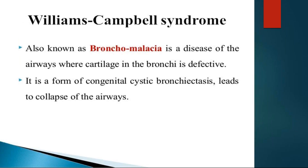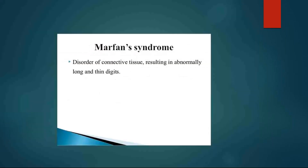Williams-Campbell syndrome is also known as bronchomalacia, where the cartilages in the bronchi are defective. It is one of the common causes of congenital bronchiectasis, leading to collapse of the airway. Marfan syndrome is a disorder of connective tissue resulting in abnormally long and thin digits.